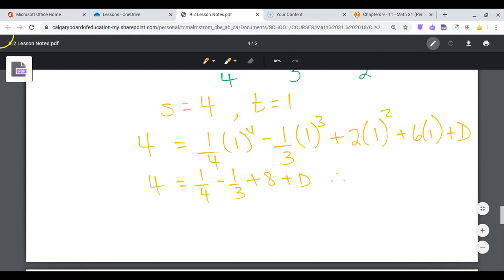And when you tidy that all up, I'm running out of room here. d is equal to, s is equal to 1 quarter t to the power of 4 minus 1 third t cubed plus 2t squared plus 6t minus 47 over 12.